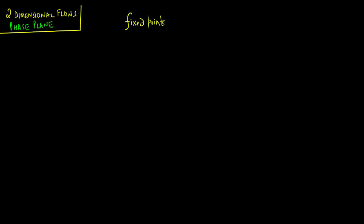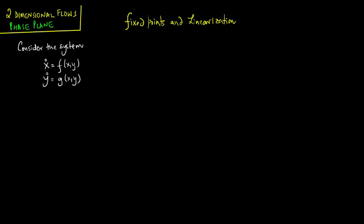In this lecture, we deal with fixed points and linearization. Consider the system x-dot equal to f of x, y and y-dot equal to g of x, y. We suppose that (x*, y*) is a fixed point.